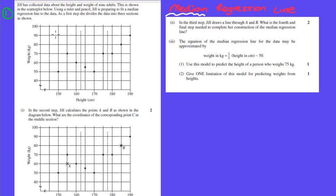Number one says: In the second step, Jill calculates the points A and B as shown in the diagram below. What are the coordinates of the corresponding points C in the middle section? So our second step for any median regression line is going to be drawing on your middle point.